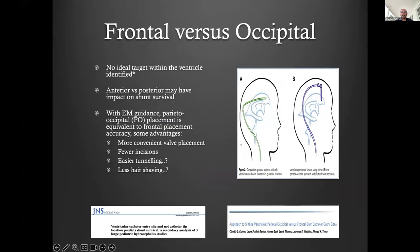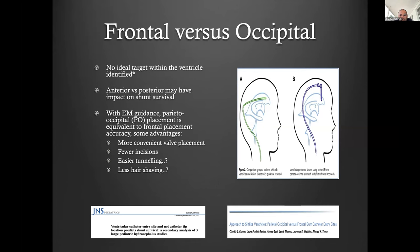The issue of frontal versus occipital shunt placement is always going to be a discussion point. It boils down to institutional memory, what you've been taught, and what you're comfortable with. This study by Kessel and his team showed there is no ideal target within the ventricle, and that the entry point appeared to have more value than the final tip position, as long as the catheter was placed in CSF.